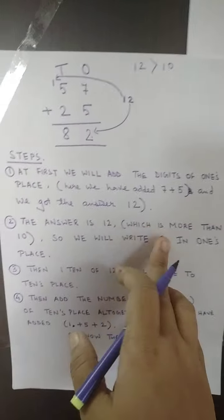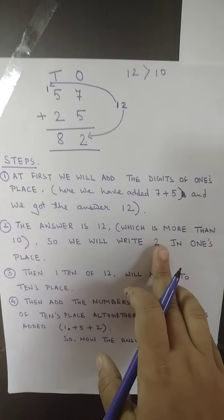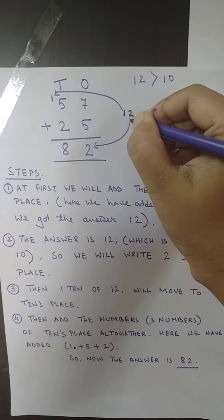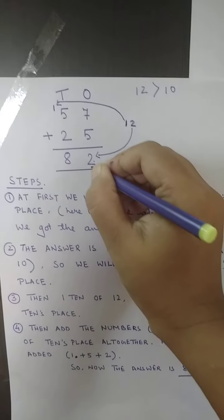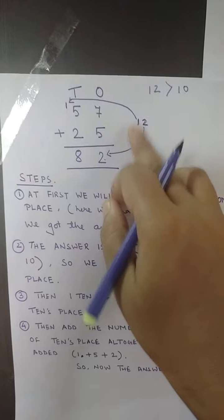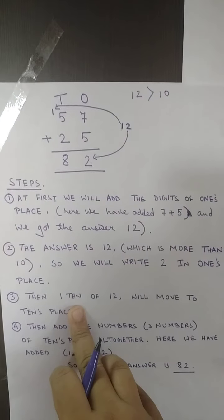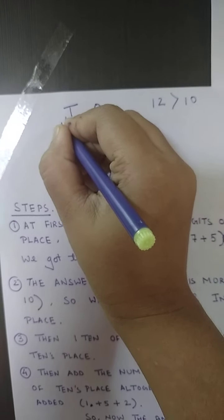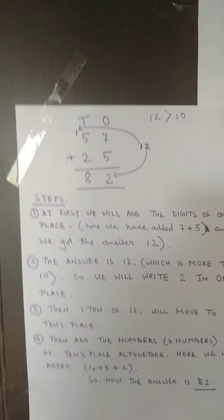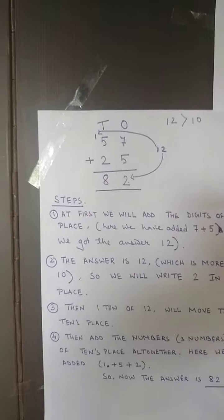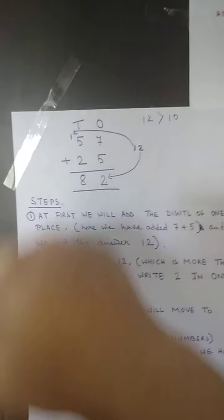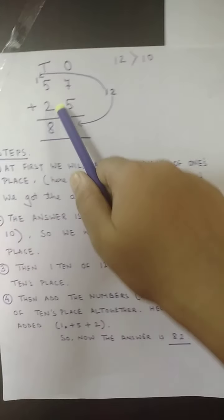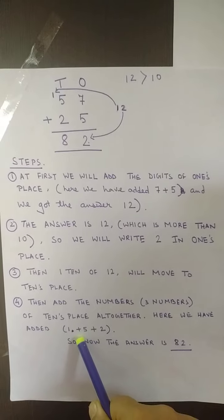So the answer 12 is more than 10 — we write 2 in the ones place. Then this 1 moves on to the tens place. Now I count these three numbers: 2 plus 5 is 7, then 7 plus 1 is 8. So I have added 5 plus 2 plus 1 and got my answer 8 in the tens place. So the final answer is 82.